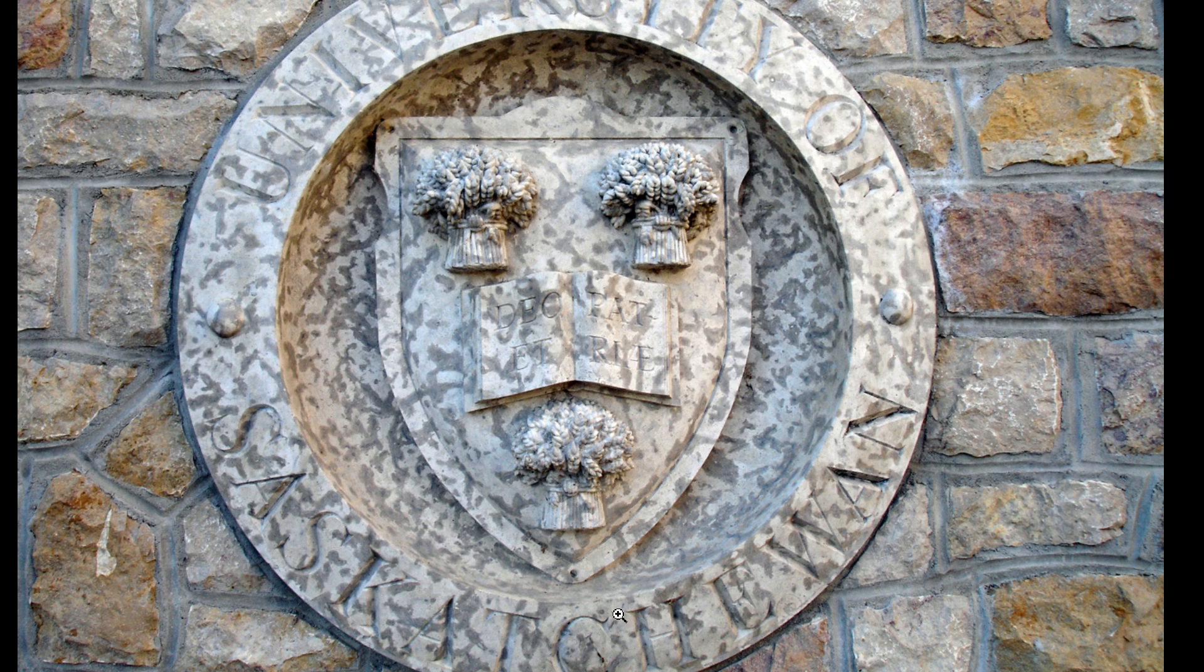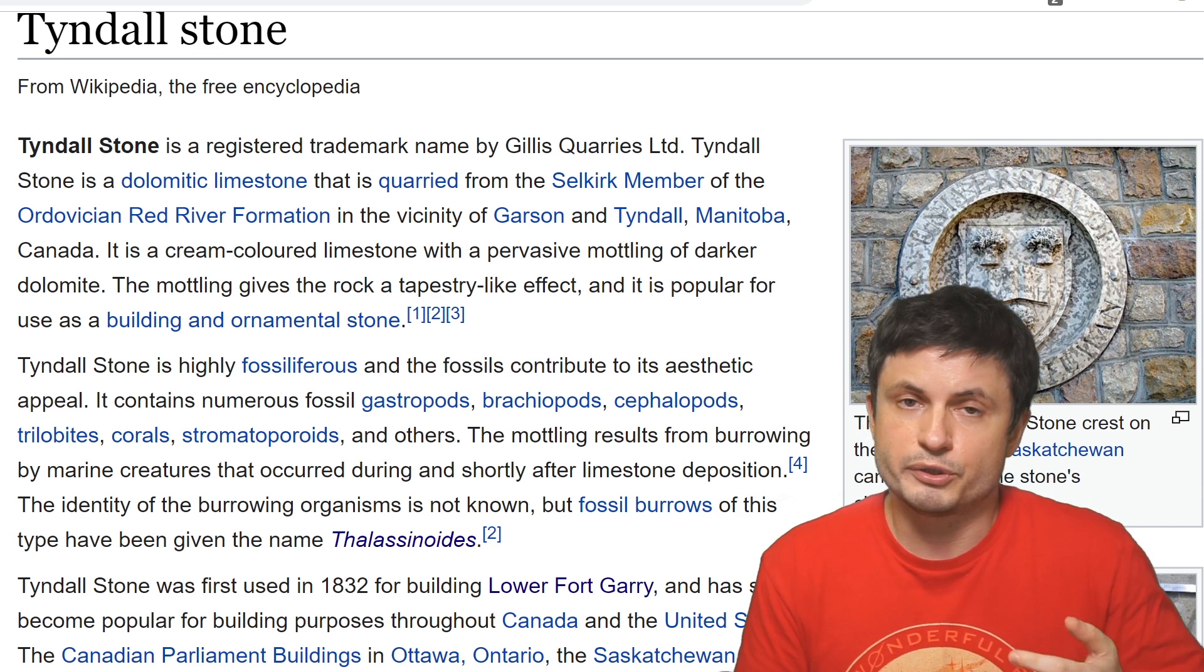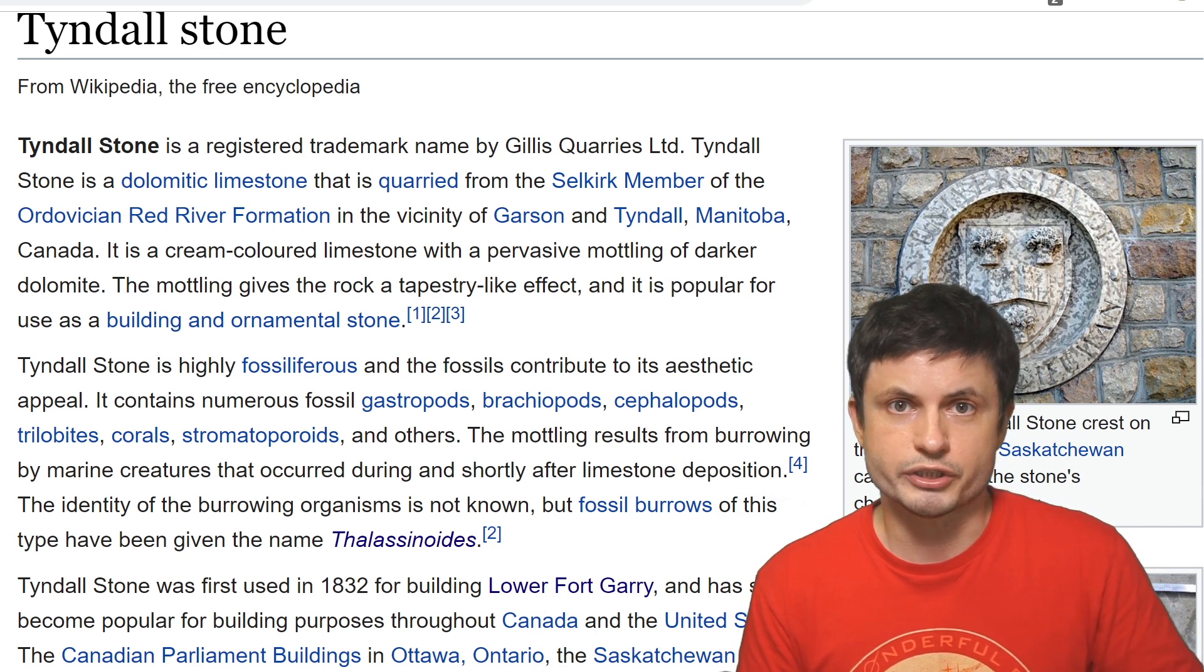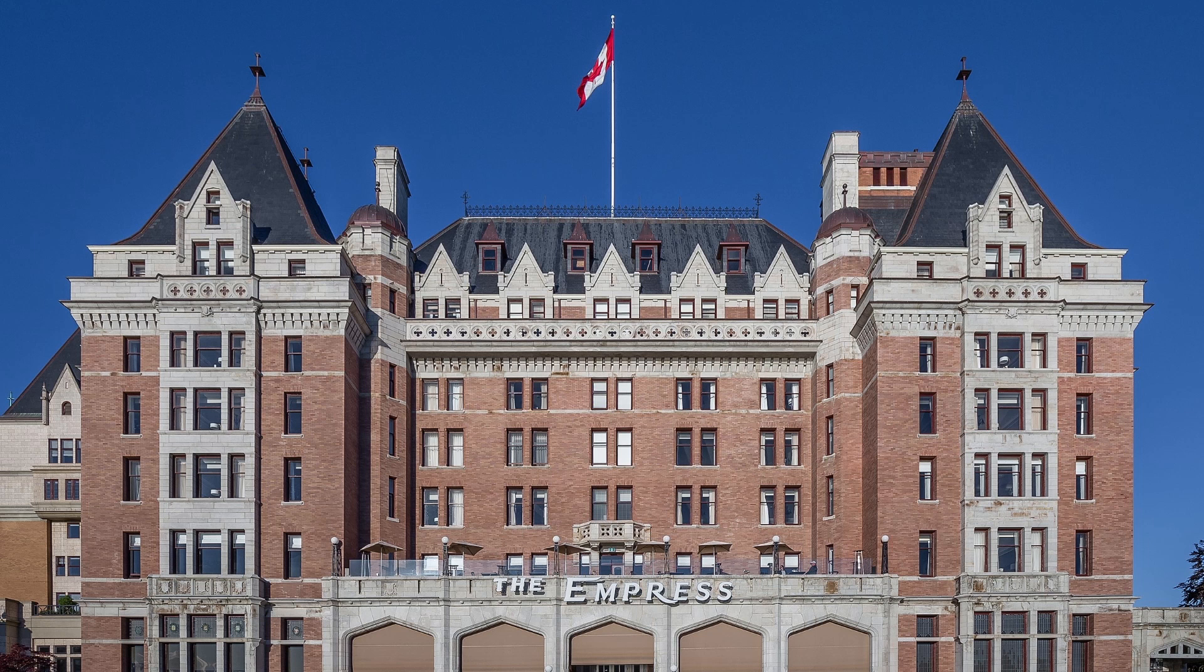With the stone itself becoming relatively popular back in the days in producing all sorts of unique looking structures. For example, here is what this looks like on the Canadian Museum of Civilization. And here is what this looks like on the famous hotel in Victoria in British Columbia known as the Empress.